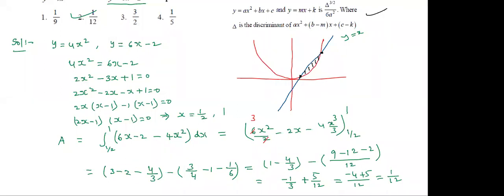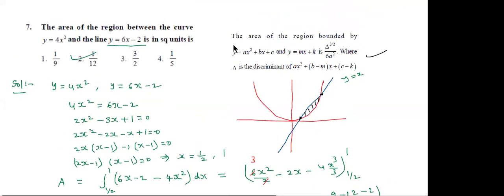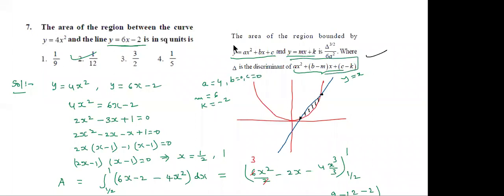I explained the general method. If you want the shortcut method, use the formula Δ^(3/2) / (6a²). For y = Ax² + Bx + C with y = 4x², A = 4, B = 0, C = 0. For the line y = Mx + K: M = 6, K = -2. Find the discriminant of the combined quadratic, then apply the formula.